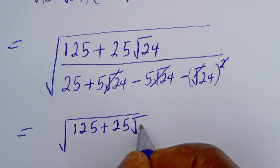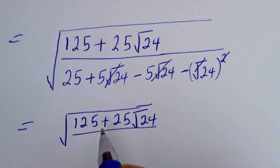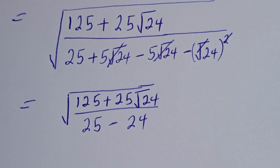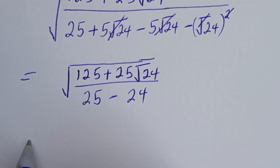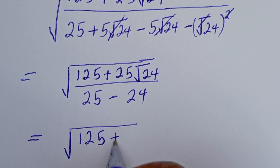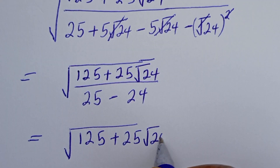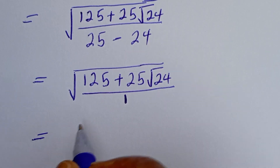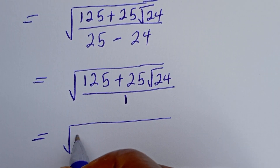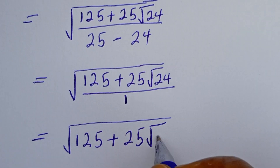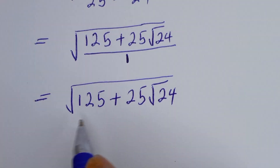We have square root of 125 plus 25 root 24 divided by 25 minus 24. This is equal to square root of 125 plus 25 root 24 divided by 25 minus 24, that is 1. So this simplifies to square root of 125 plus 25 root 24.